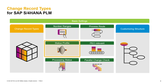Secondly, you need to assign your record type to a status profile. How to set up a status profile I will show in another video. The connection of status networks and change record types also happens in our customizing table.